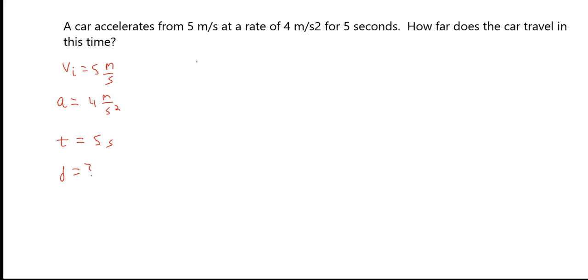At this point, what we'll do is we'll go to our reference table, and we'll see if we have any equations that match our givens and unknowns. And lo and behold, we do. We have an equation that says our displacement is equal to an initial velocity times time, plus one-half the acceleration times the time squared.